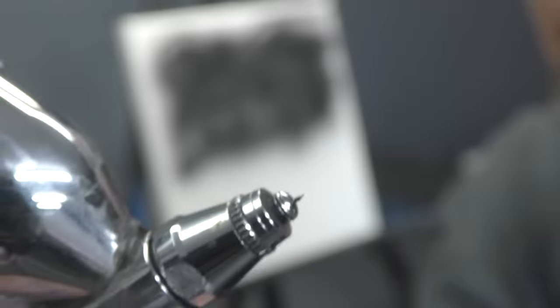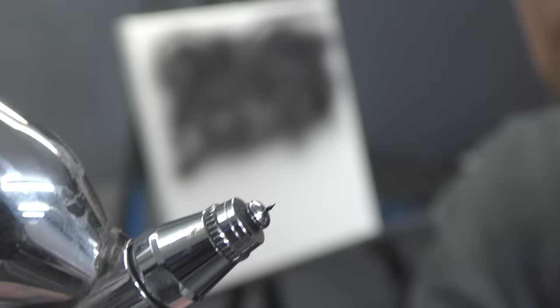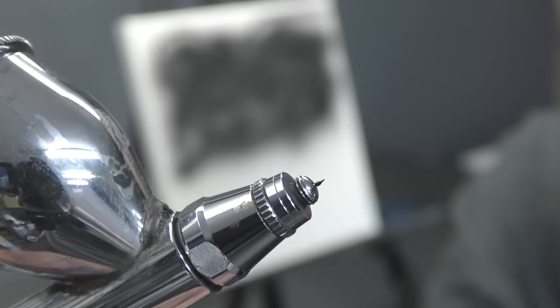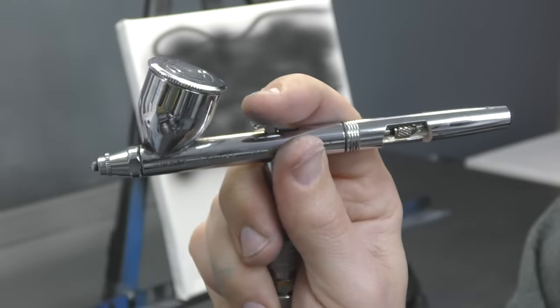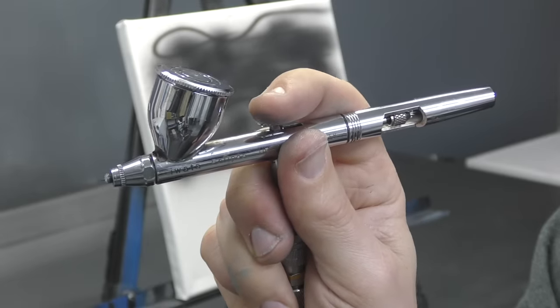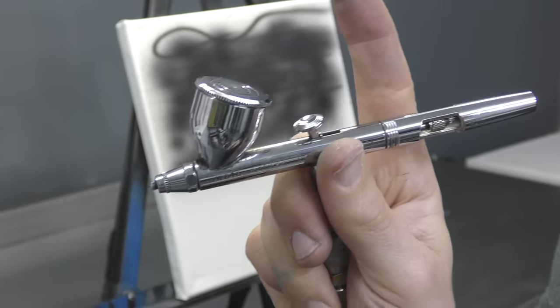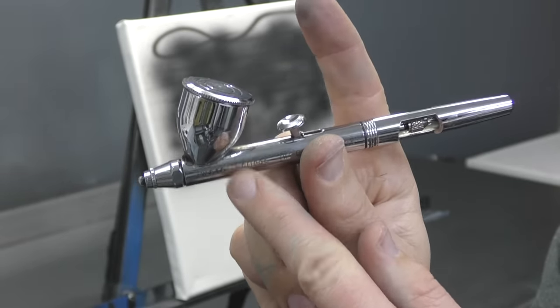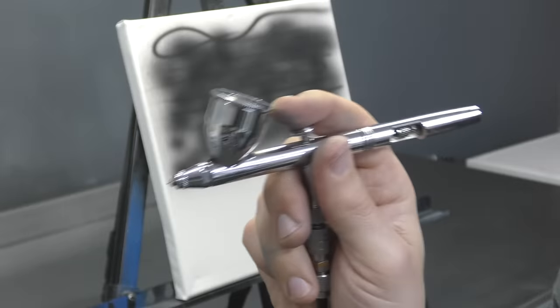That is the first step to controlling your tip drying: learning how to airbrush properly. Keep the air pressed down at all times, and then just pull back for paint. You don't want to pull back and then let go, because then you're going to have that issue I explained earlier.